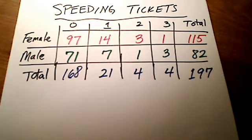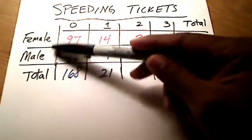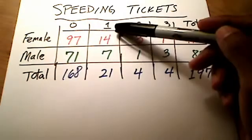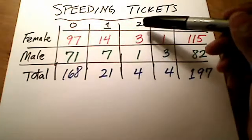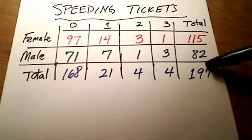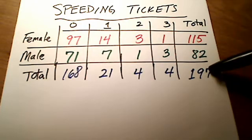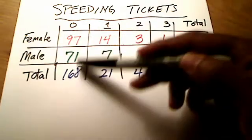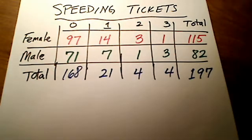So in this table, I've got speeding tickets for both male and female, and how many of them had zero tickets, one ticket, two tickets, or three tickets. These columns over here show totals, as well as this row which shows totals for the two rows above it.